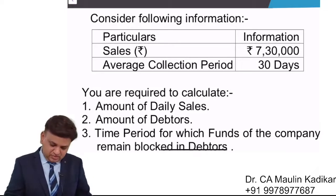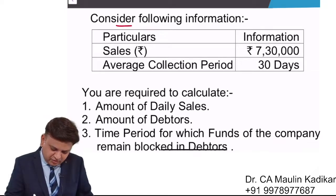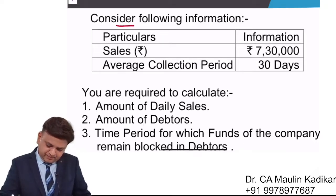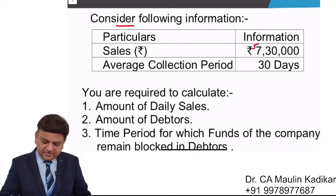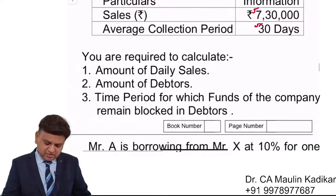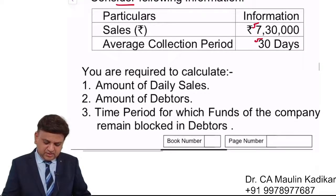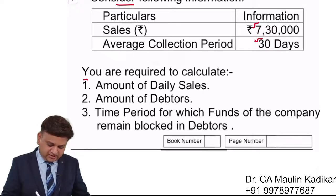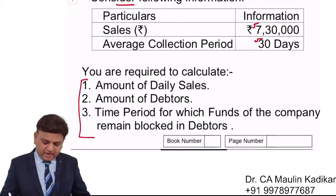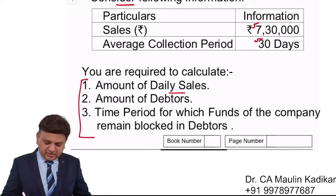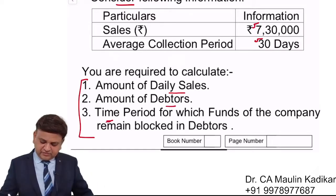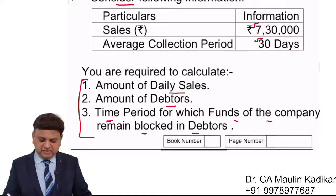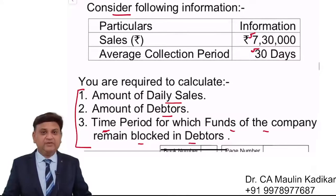Let us see the next question. Consider the following information: sales of a company is given as ₹7,30,000; average collection period is 30 days. You are required to calculate three things: the amount of daily sales, the amount of debtors, and the time period for which funds of the company remain blocked in debtors. I request you to give answers for the first and second part in the chat box.